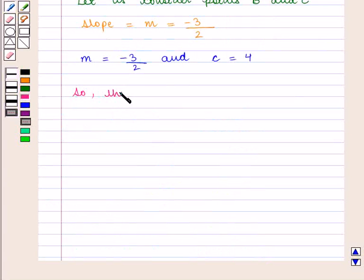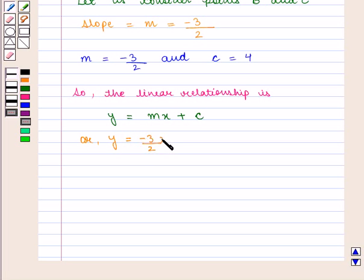y is equal to m into x plus c, that is y is equal to m which is equal to minus 3 by 2 into x plus c that is 4. So we have y is equal to minus 3 by 2 into x plus 4.